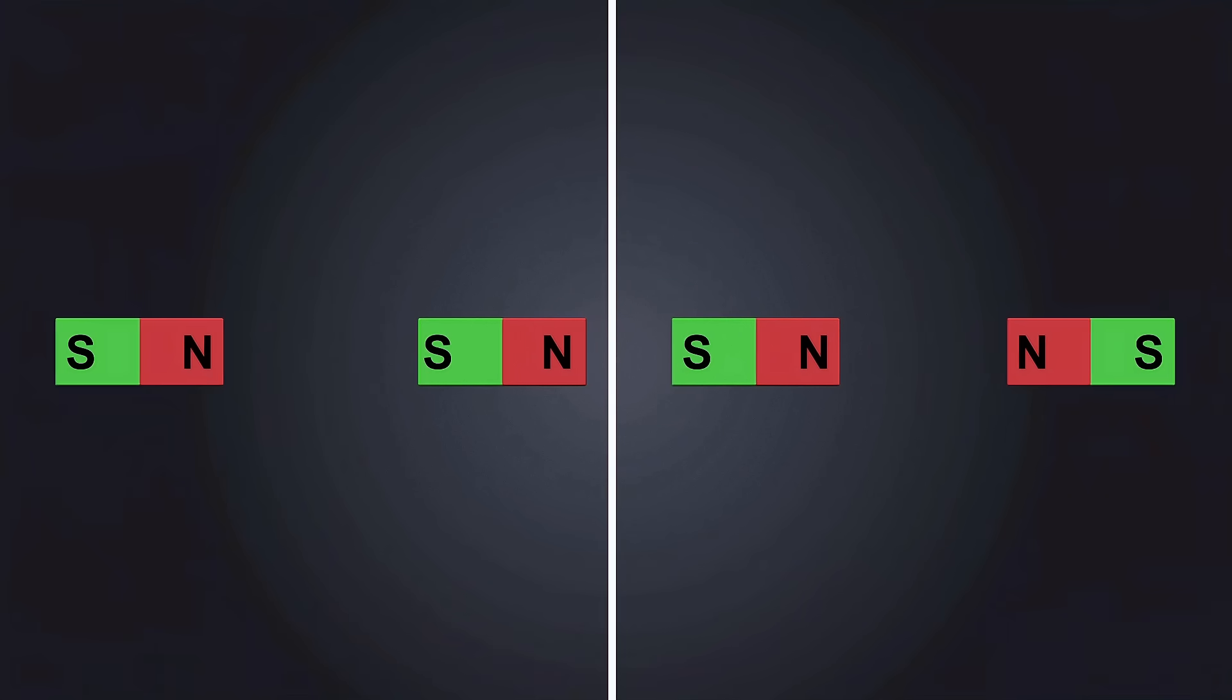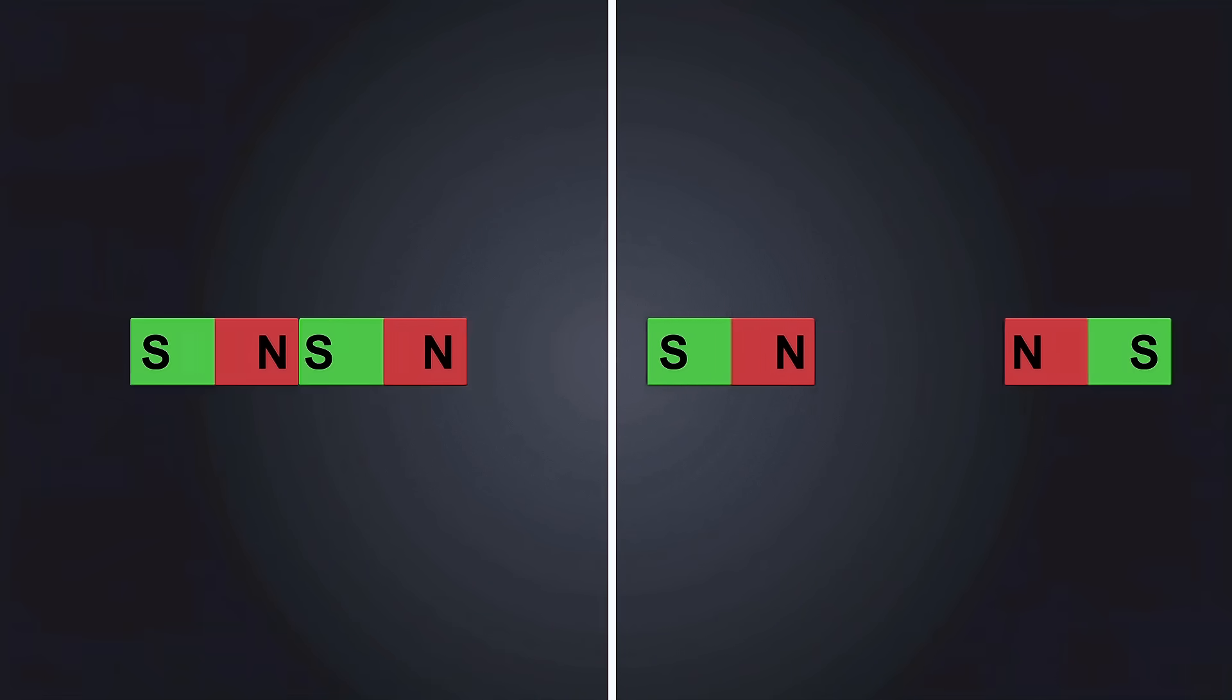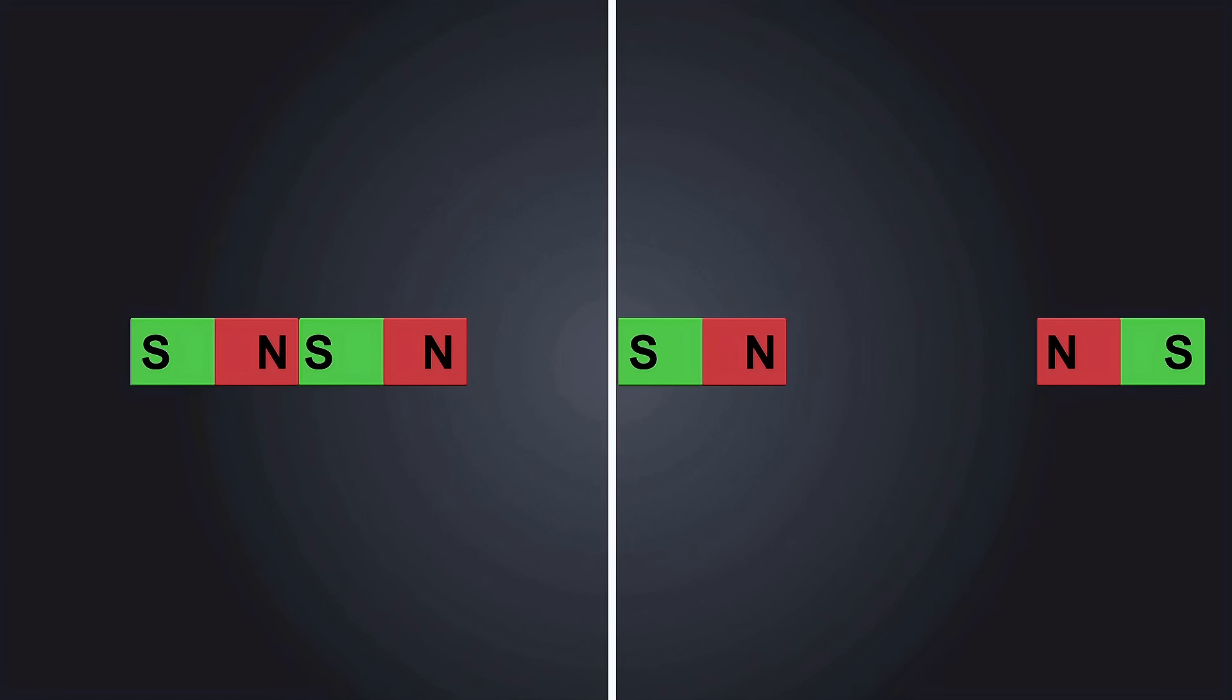So now we know why some metals can become magnetic, while others cannot. Now the remaining question is, why do magnets sometimes attract and sometimes repel, depending on how you hold them?